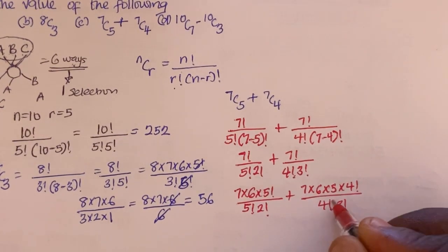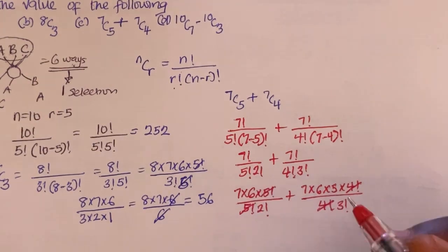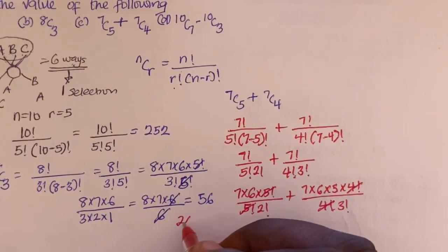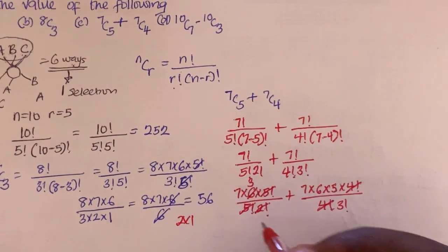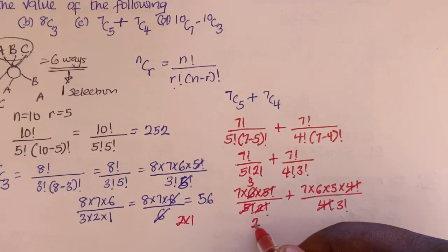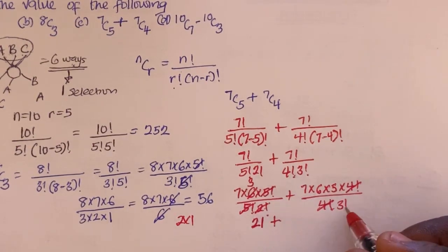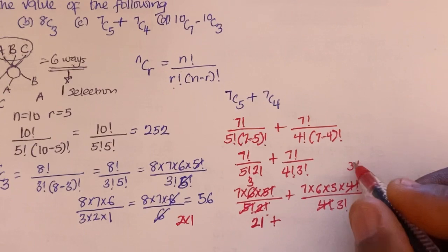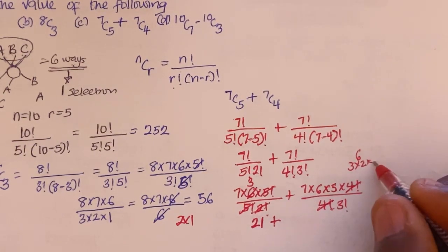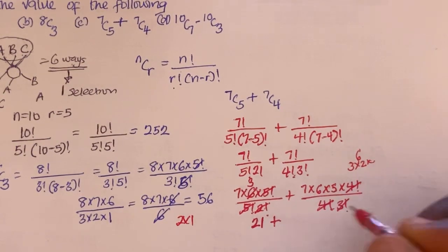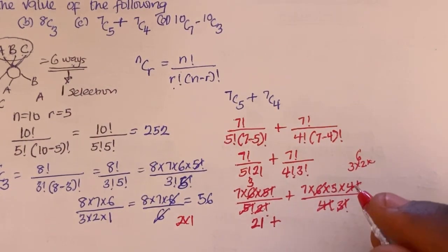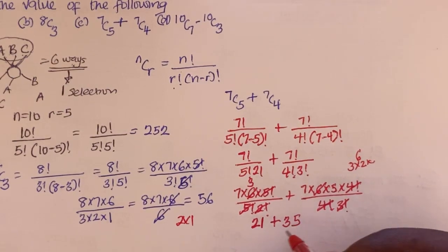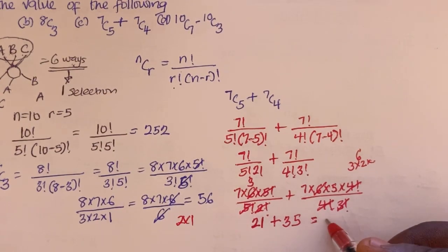The 5! cancels with 5! and 4! cancels with 4!. So we have (7 × 6) divided by 2! plus (7 × 6 × 5) divided by 3!. Since 2! = 2, we get 6 ÷ 2 = 3, giving 3 × 7 = 21 for the first part. For the second part, 3! = 6, so 6 cancels, leaving 7 × 5 = 35. The total is 21 + 35 = 56.